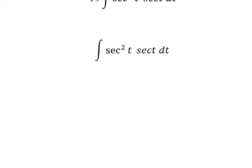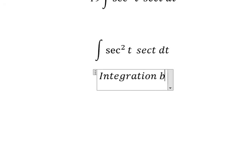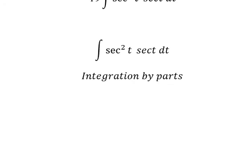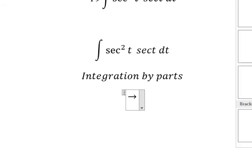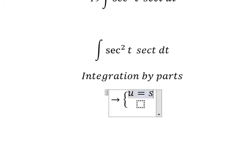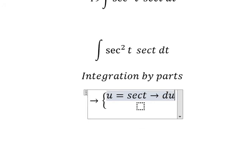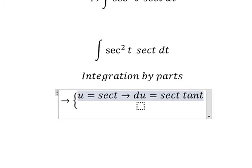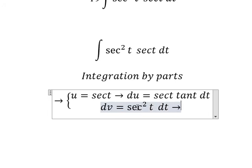Now I will concentrate on this expression. We need to use integration by parts. We set u equals sec(t), so the first derivative gives du equals sec(t)·tan(t)·dt. We set dv equals sec²(t)·dt, so v equals tan(t).